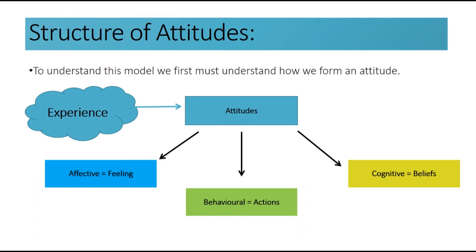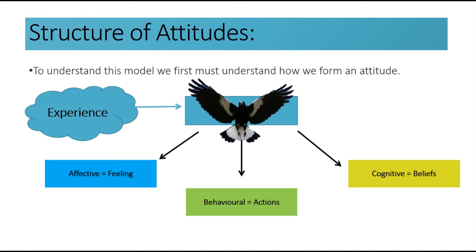Together, these components make the ABC model of attitudes. Let's put these components together into action to demonstrate how they work together by looking at my attitude towards birds. Looking at the affective component, I dislike and am fearful of birds because in the spring they swoop us as we walk under trees. This shapes my attitude and behavior, as I would intentionally walk away from trees with magpies and scream if one swoops me. Screaming and avoiding trees are my actions and therefore behaviors as a result of my attitude. In the cognitive component, my dislike of birds comes from the belief that they are violent and will swoop me if I go near them, which continues to influence my behavior and feelings towards birds in the spring.